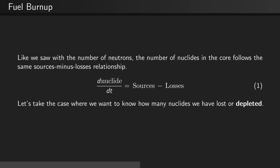Like we saw with the number of neutrons, the number of nuclides in the core follows the same sources minus losses relationship. That is, the time derivative of the number of nuclides in the core is equal to the sources of those nuclides minus the losses.